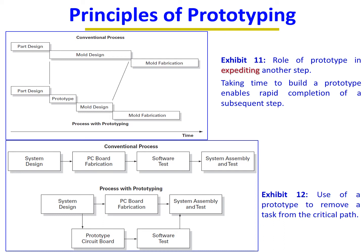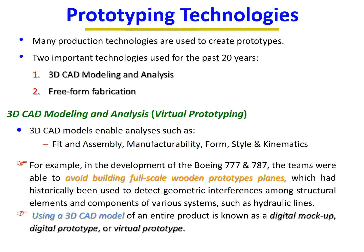Many production technologies are used to create prototypes. Two important technologies have been prominent for the past 15–20 years. Earlier, prototypes were made largely by hand or in a carpentry shop using wood and similar materials, but the two major modern technologies are 3D CAD modeling and analysis, and free-form fabrication.